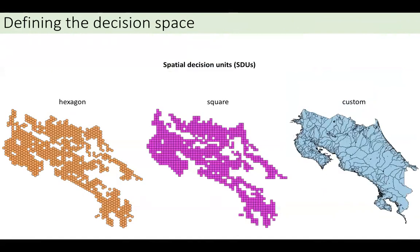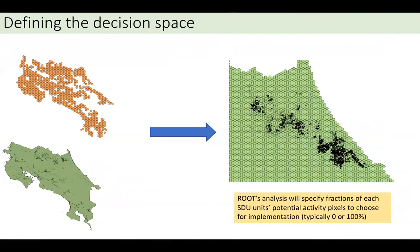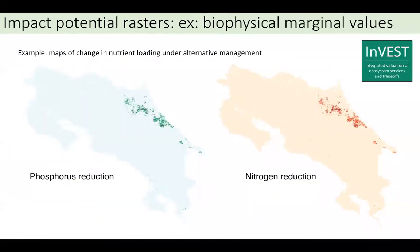Next, we define the decision space. Root doesn't optimize at the pixel level — it requires slightly larger aggregated spatial decision units. If you don't have anything particular in mind, it can generate a regular grid of either hexagons or squares of an area the user can specify, or you can provide a custom shapefile. In this case, this is a map of watersheds, but you could have pre-delineated potential project outlines or any other relevant shapefile. Root will overlay those activity masks with the spatial decision unit to get a potential implementation area per decision unit. The outcome of the Root analysis will be specifying what fraction of each SDU should receive the activities of interest.